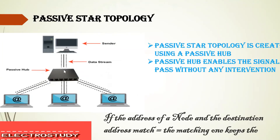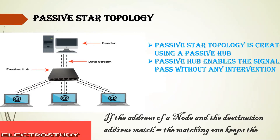Passive star topology. Here you have a hub which is a passive hub, a sender, and different destination nodes. Once the sender sends the data, it reaches the hub. This passive hub will reroute the data to different destination nodes. There is a check performed: if the address of a node and the destination address match, the data is transferred to that particular node. If not, it is cancelled and rerouted to some other destination node.